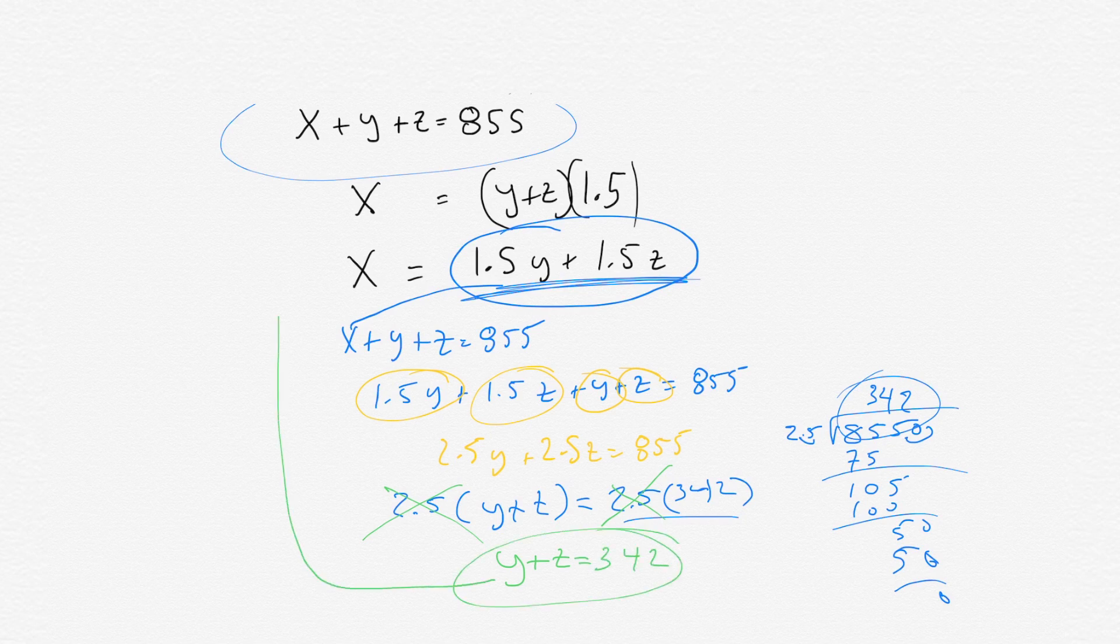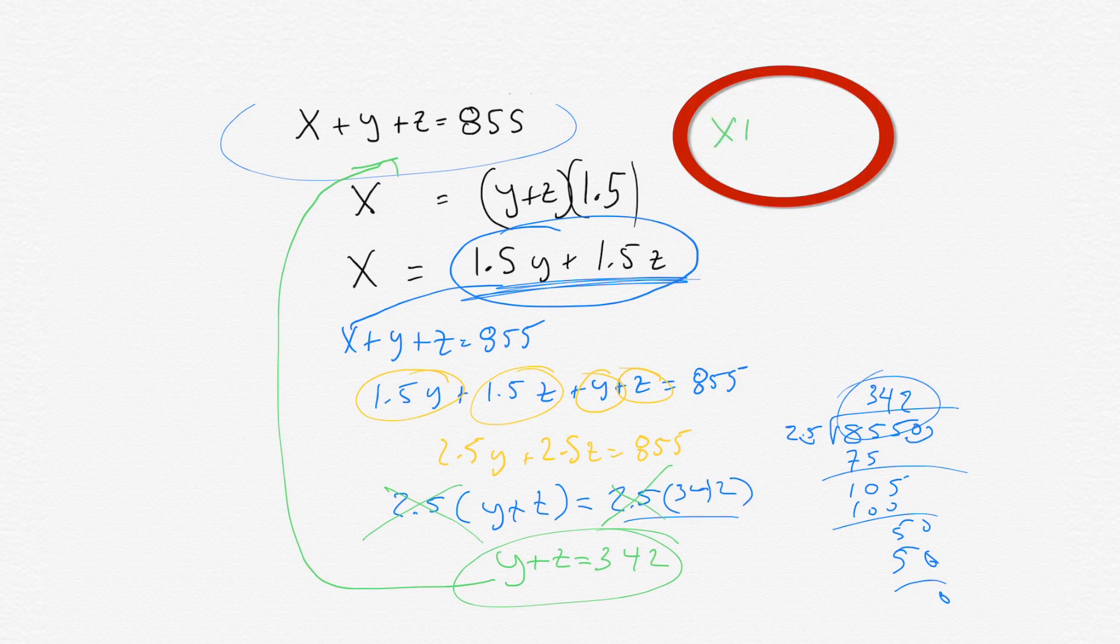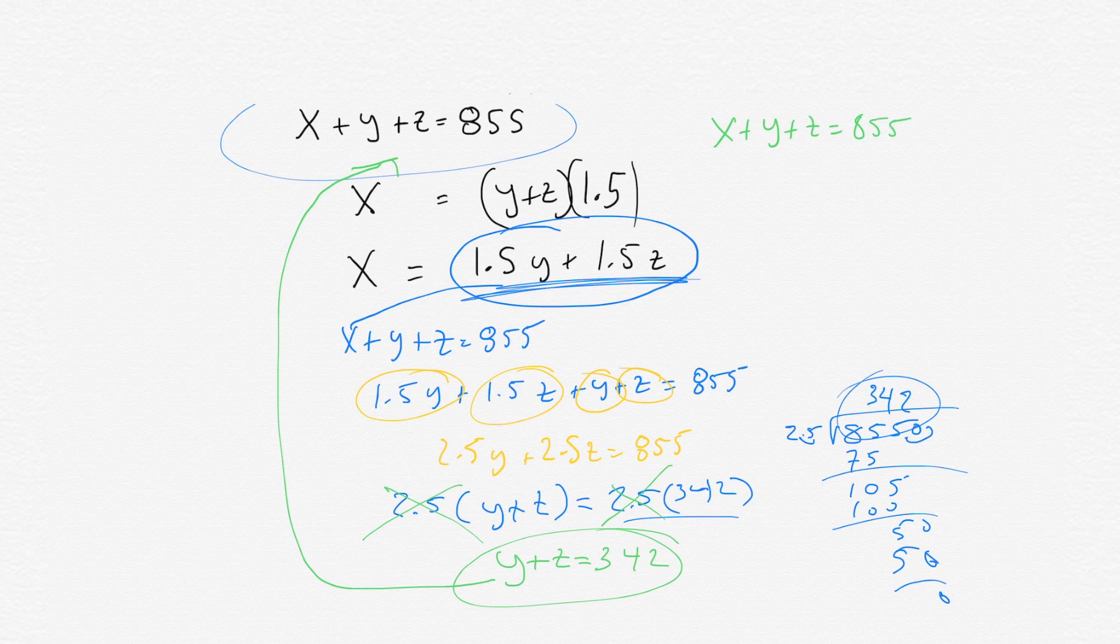Now we go back to this original equation where we have X plus Y plus Z equals 855. And we could substitute 342 for Y plus Z. So we get X plus 342 equals 855.